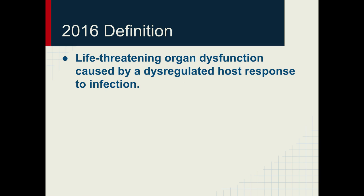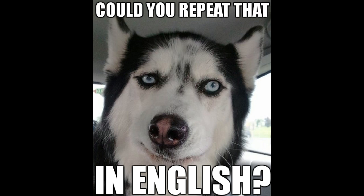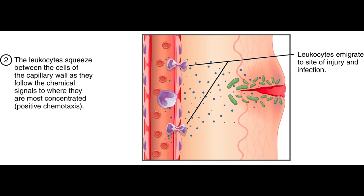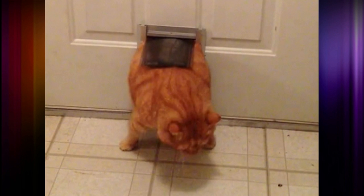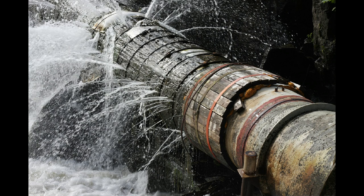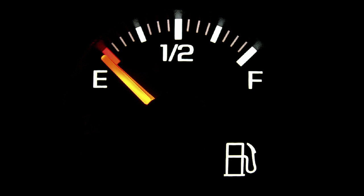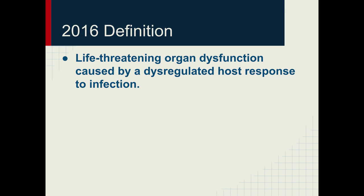Sepsis is officially defined as life-threatening organ dysfunction caused by a dysregulated host response to infection. So what does that mean? During an infection, white blood cells travel through your blood vessels to the site of an infection. In order for white blood cells to squeeze outside, your blood vessels actually become leaky to let them slip through. However, the fluid inside your blood vessels starts to leak out too. For a serious infection, this is just like having a leaky pipe — if too much fluid leaks out, your body doesn't have enough blood to supply your vital organs, and then you start to die.